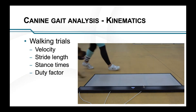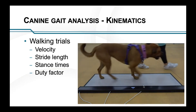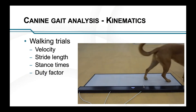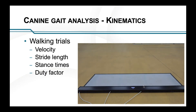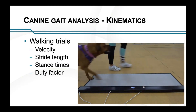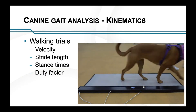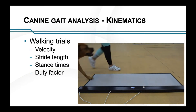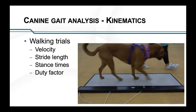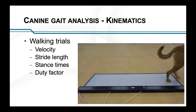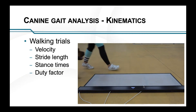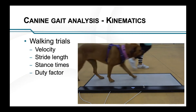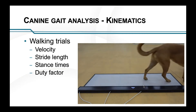You might see shortened stride lengths, which are associated with lamenesses. And stance times are really great for looking at asymmetry as well as those forces. How long each foot is in contact with the floor can give you an idea of loading and symmetry as well.